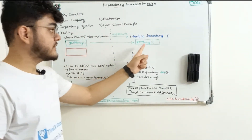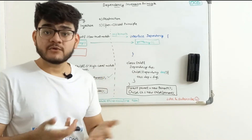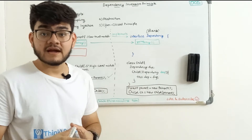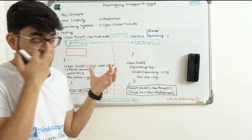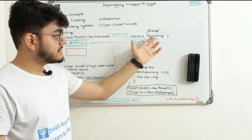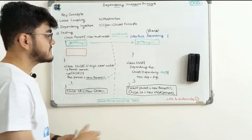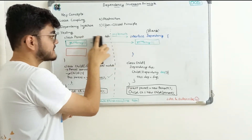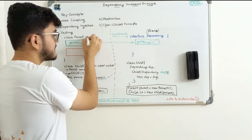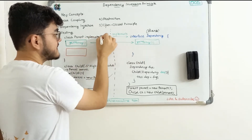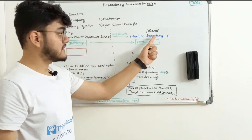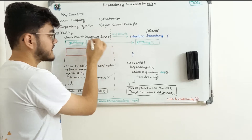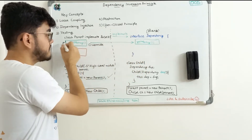The parent says: I'm going to move my money to the bank, and if the child wants money, it will not ask me directly — I'll redirect it to the bank. So this interface defines the get money function. Now the parent class implements this interface: `class Parent implements Dependency` (or Bank). Since the parent implements the interface, it overrides the get money function and provides the implementation in the green section. We have now made the low-level module dependent on the abstraction.